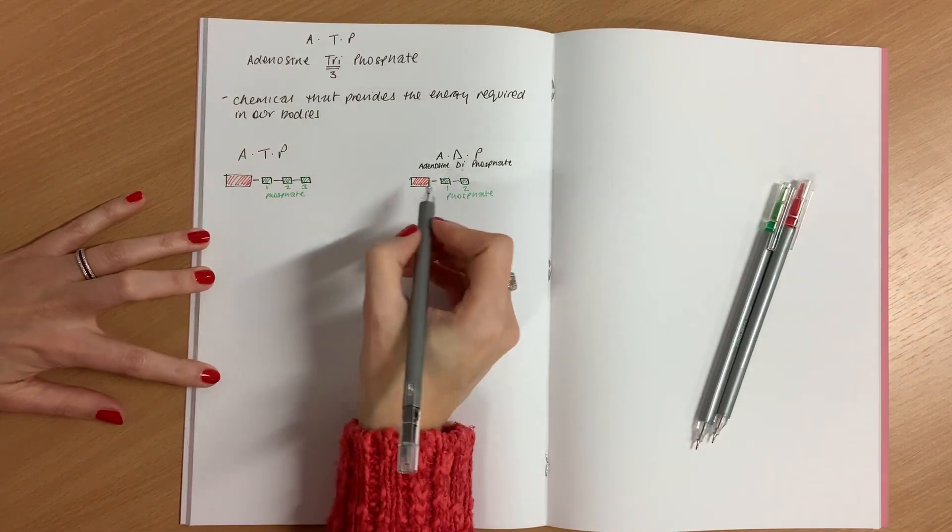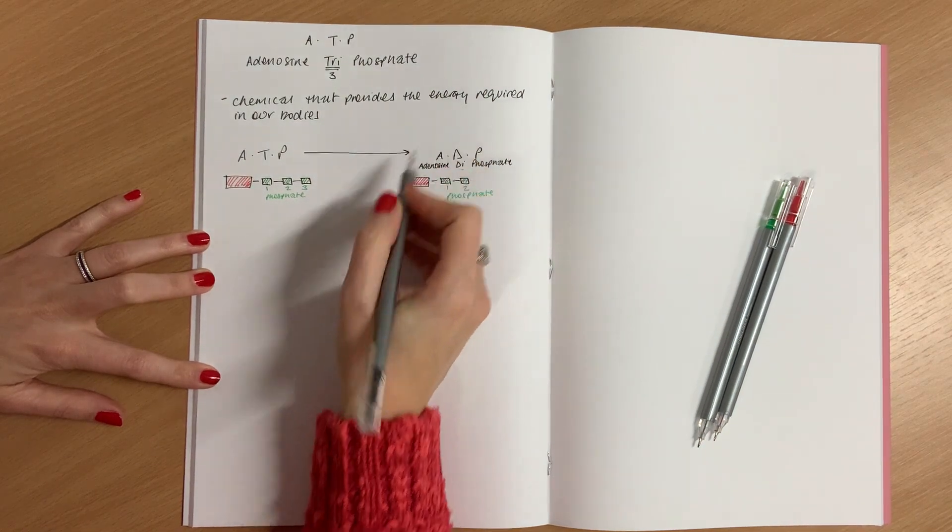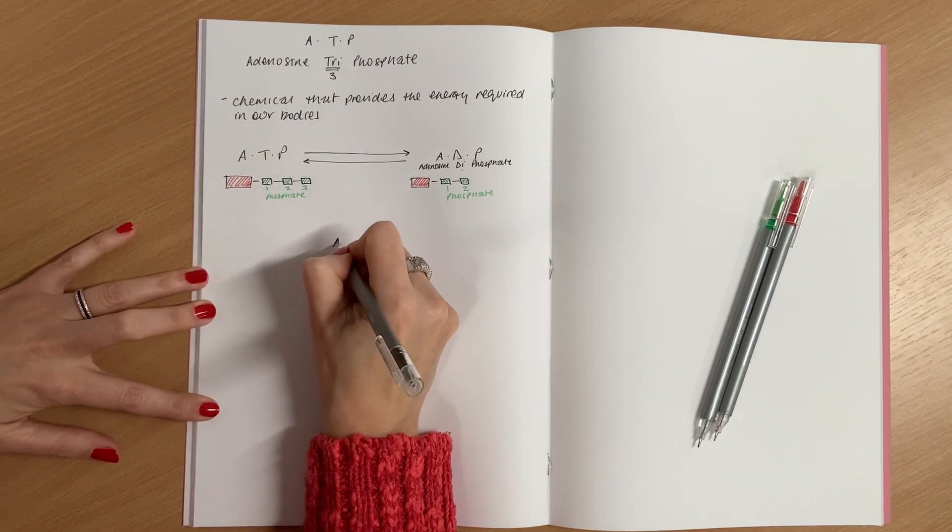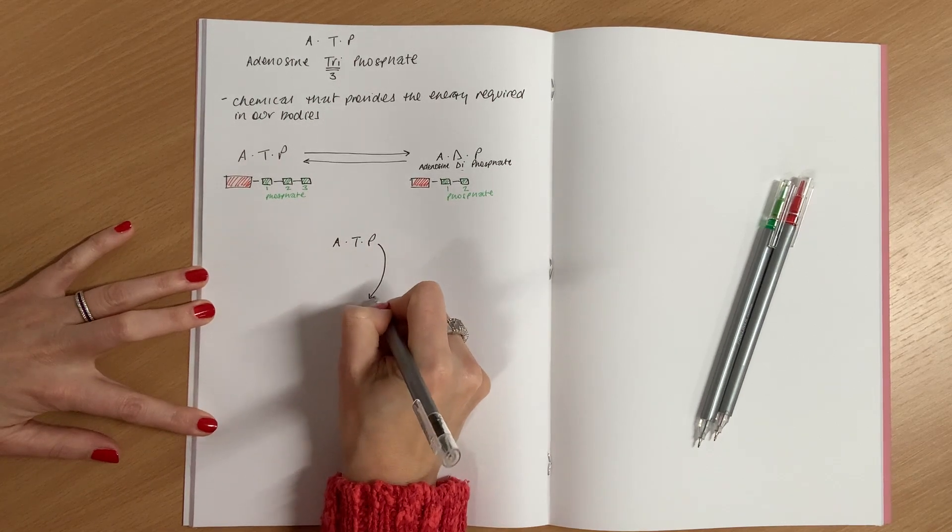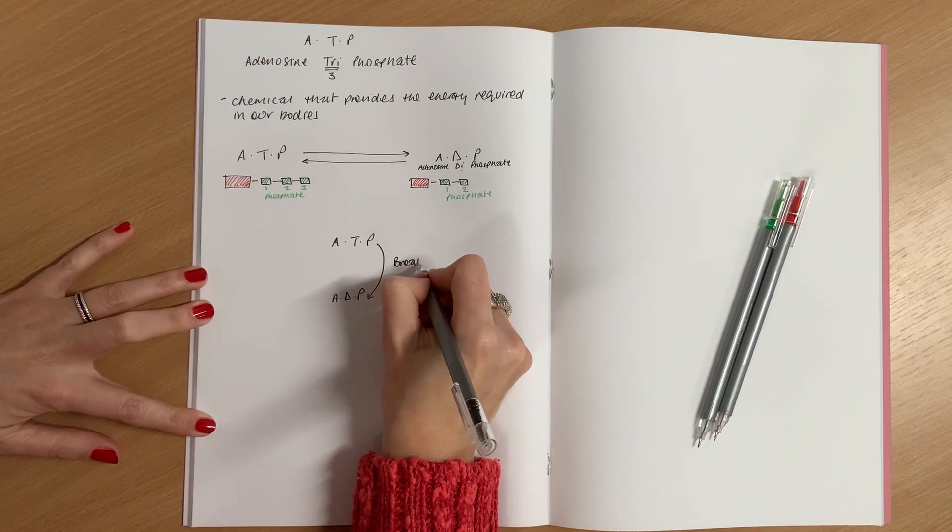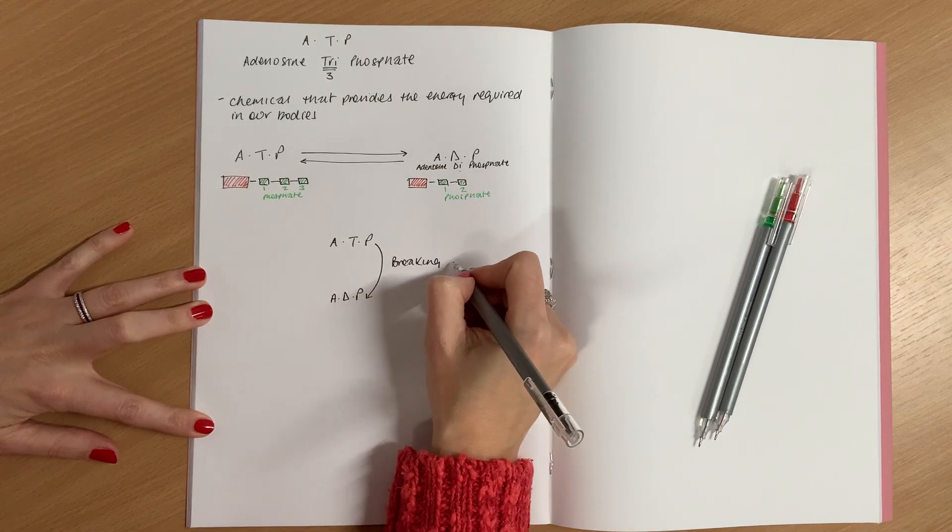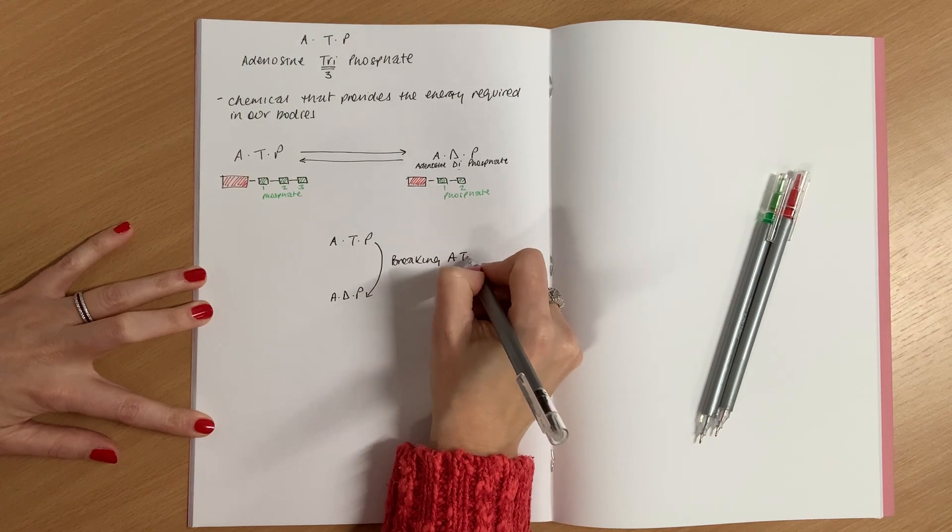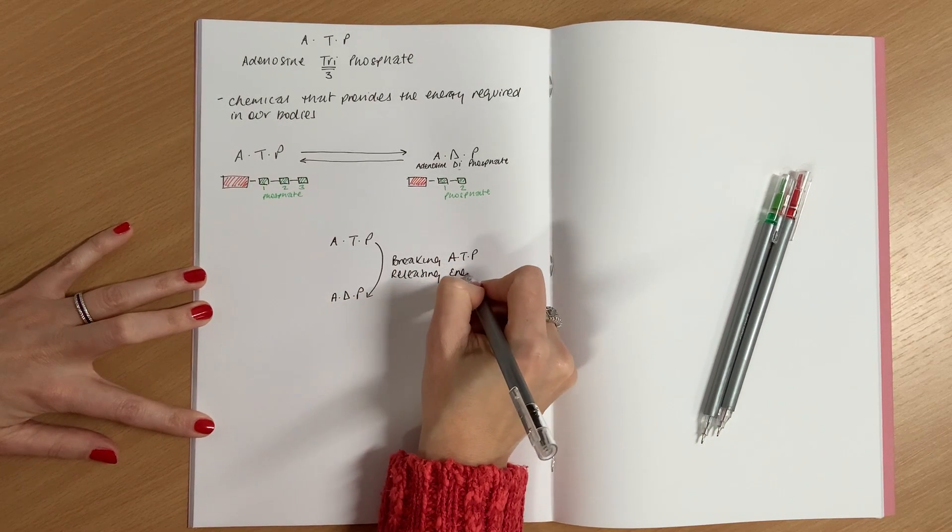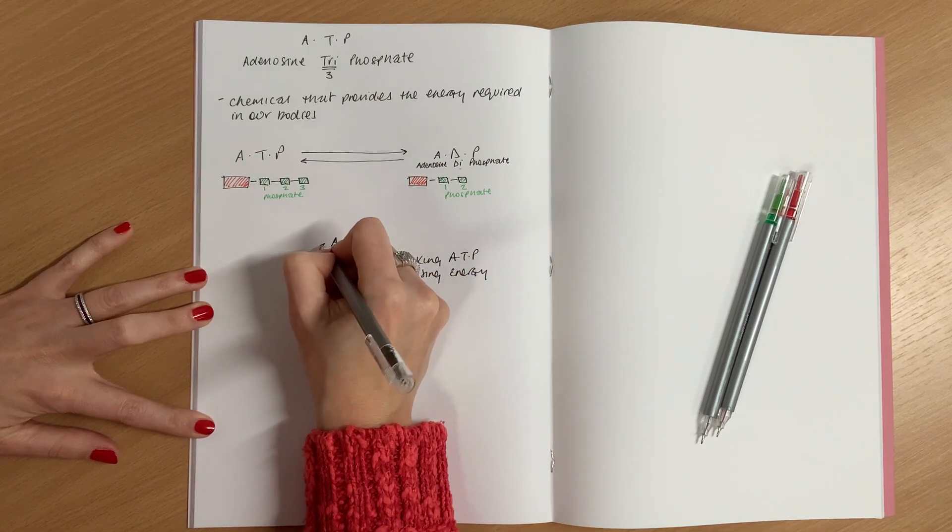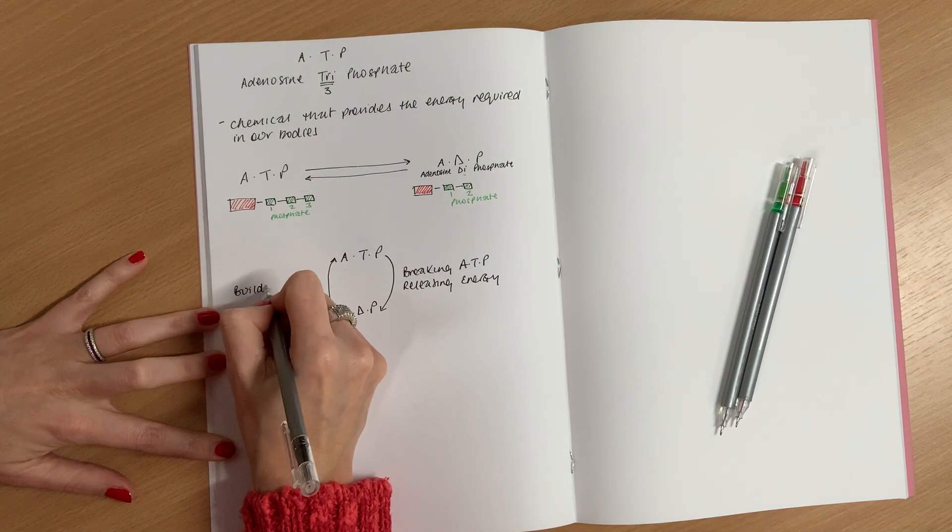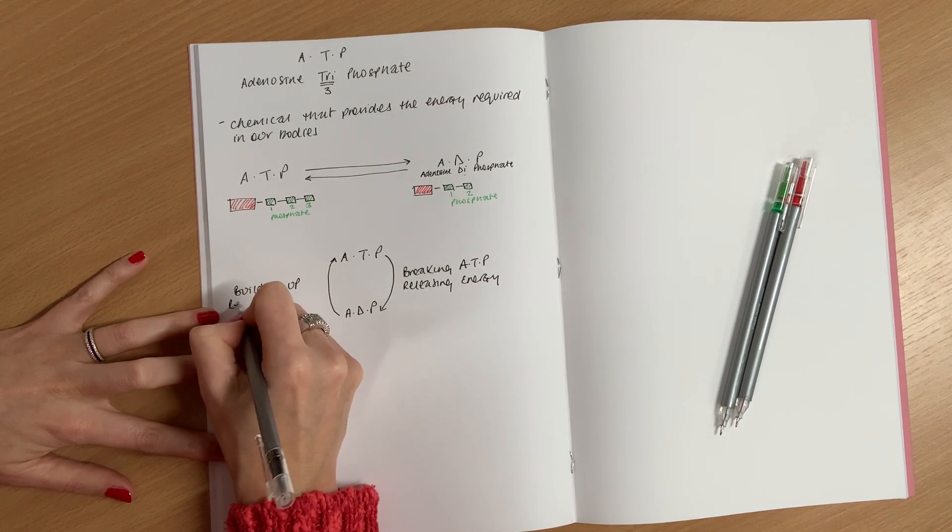What we're going to learn is the process of the change between, and the importance of going from ATP to ADP. Because what essentially is happening is, during this process, we're going from ATP to ADP, we're breaking down this compound. And when we're breaking down ATP into ADP, we are releasing energy. Whereas, when we go from ADP to ATP, we are building up, which is requiring energy.